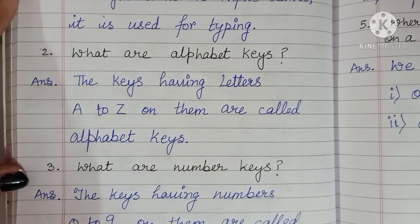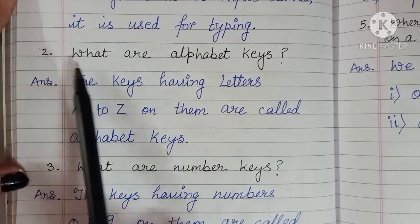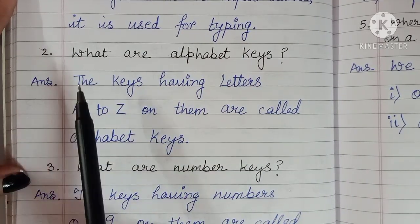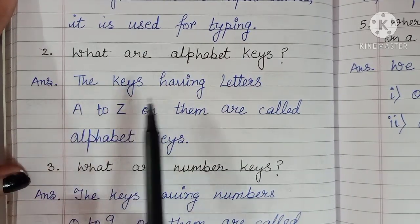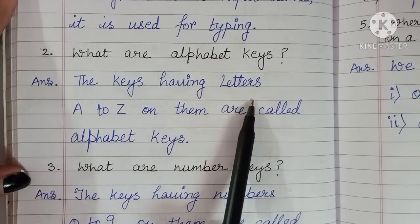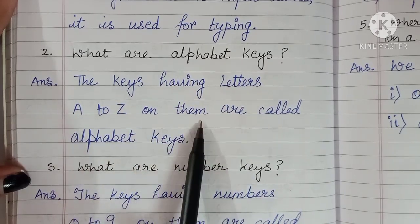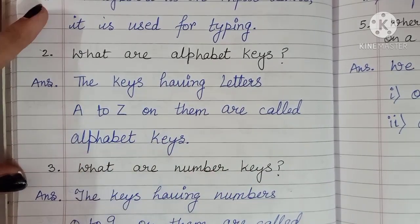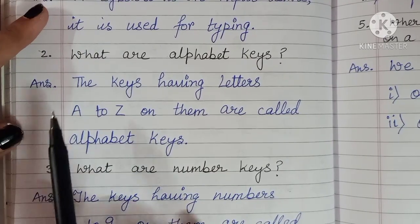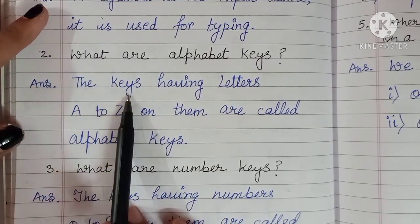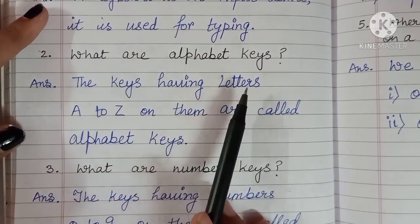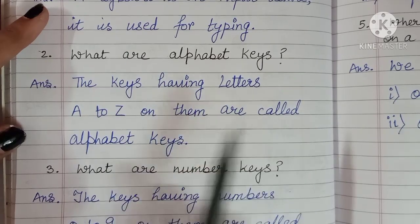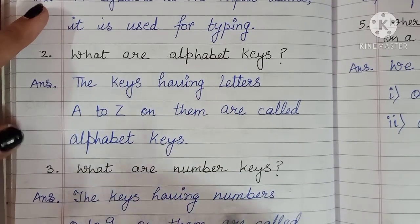Question number two: What are alphabet keys? Answer: The keys having letters A to Z on them are called alphabet keys.